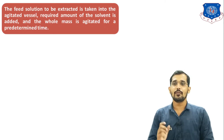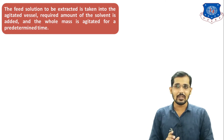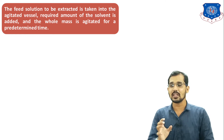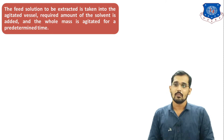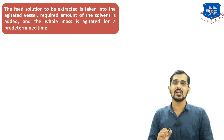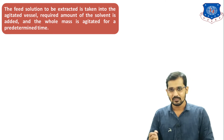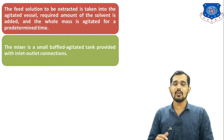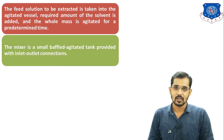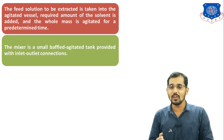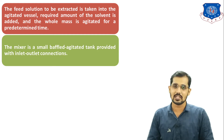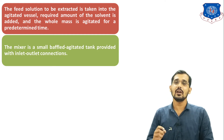The feed solution to be extracted is A plus C, where A is the feed solvent and C is the solute or liquid to be extracted, so A plus C is your feed solution F. The required amount of extracting solvent is added and the whole mass is agitated for a predetermined time to get better mixing. The mixer is a small baffle agitator tank provided with inlet and outlet connections; baffles are used to increase turbulence in the system, which increases the rate of mass transfer and ultimately the rate of liquid-liquid extraction.